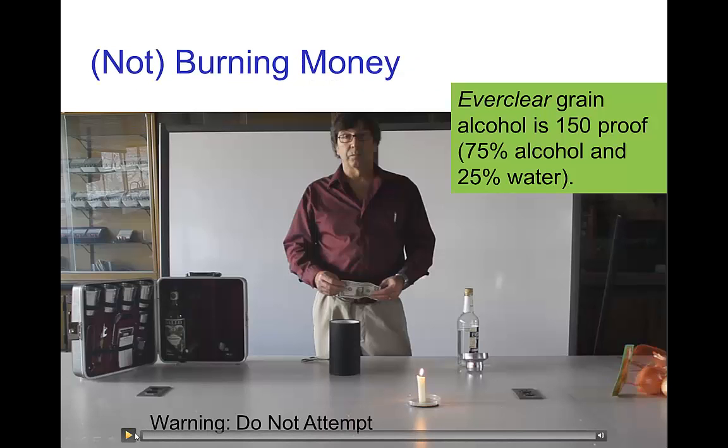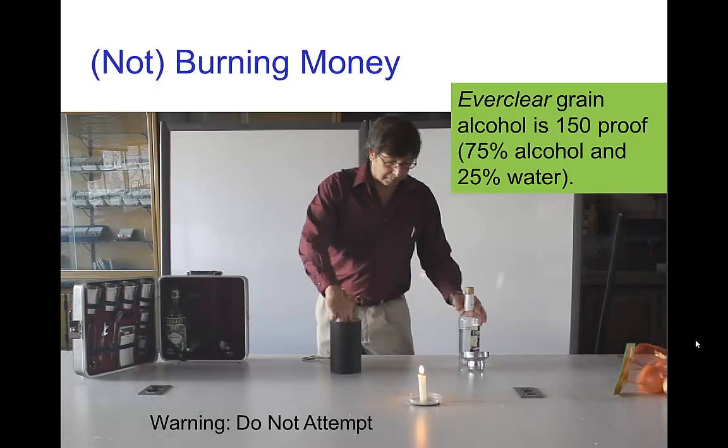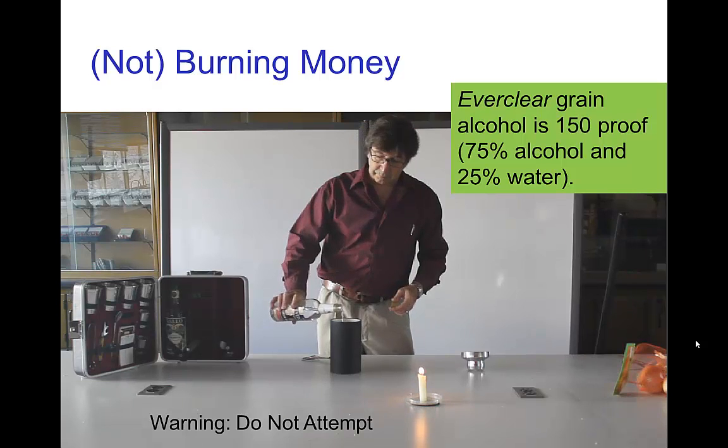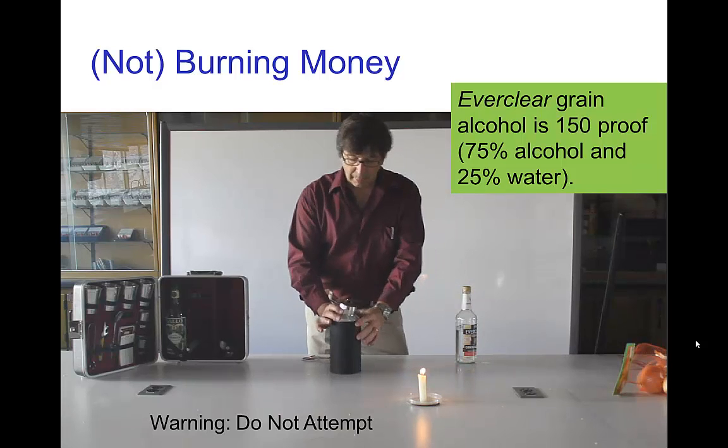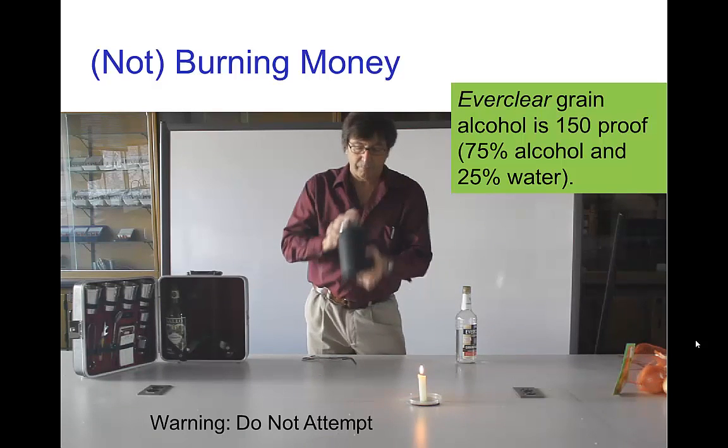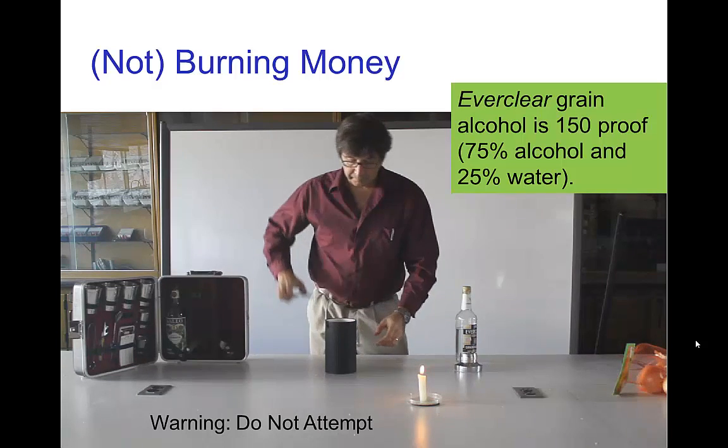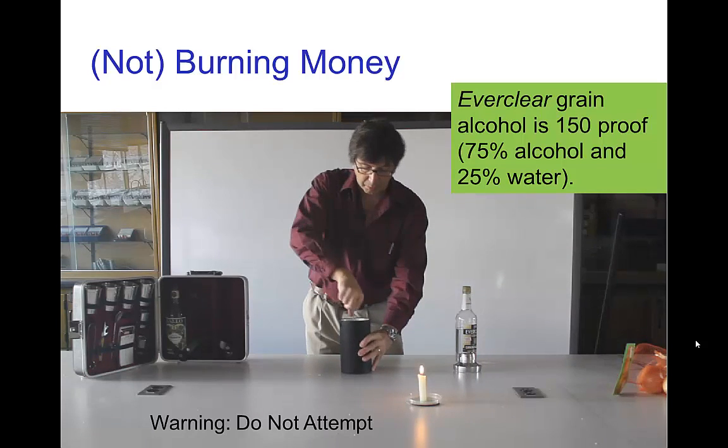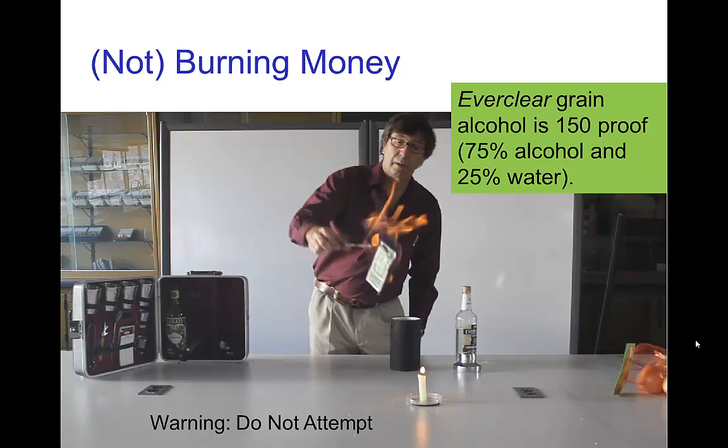Here's a little demonstration. We're going to take this dollar bill and take some of this Everclear grain alcohol - it's 150 proof. Then shake this up so that the dollar bill is nice and wet with the grain alcohol. Make sure it's nicely saturated.